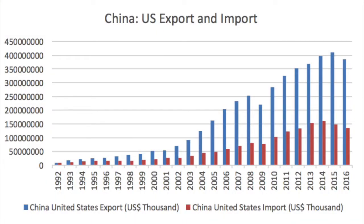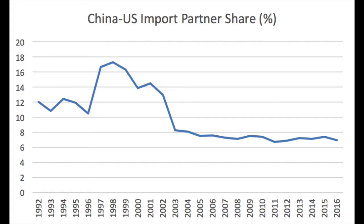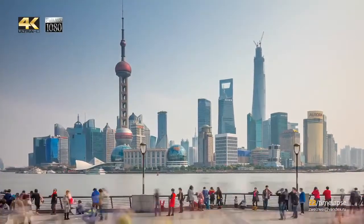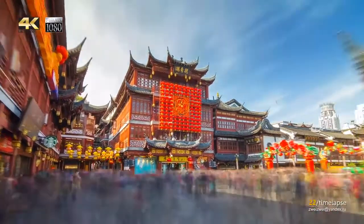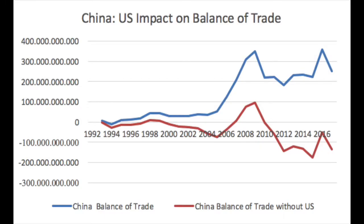The next graph emphasizes the width of the gap between exports and imports over the years. An interesting fact is that U.S. imports are currently being replaced in China by goods or services from other countries, as the percentage of U.S. partner share in Chinese imports has been decreasing over time. This trend has led to a univocal dependence of China on the U.S. market, which represents a solid stream of income. This graph in particular shows how U.S. exports tremendously influence the overall Chinese balance of trade.